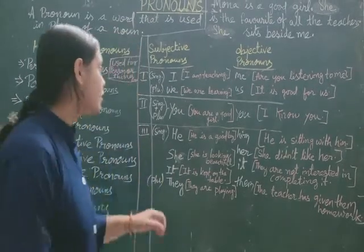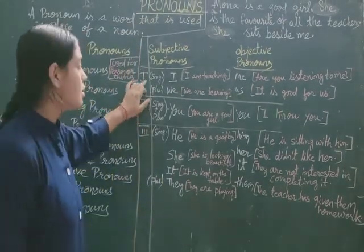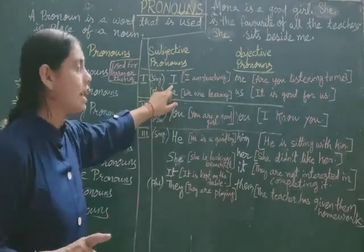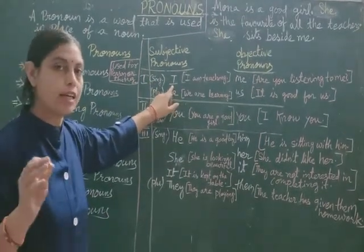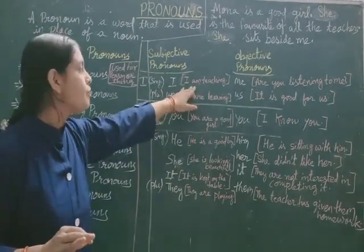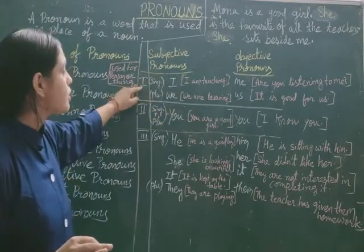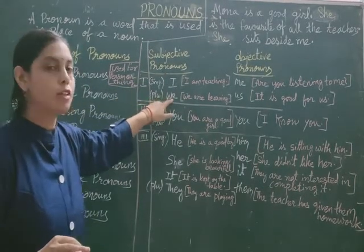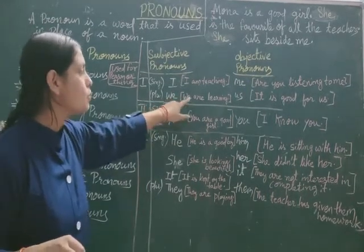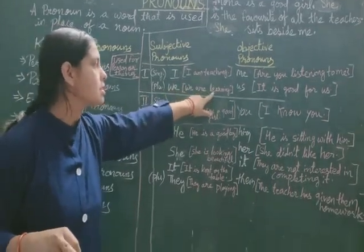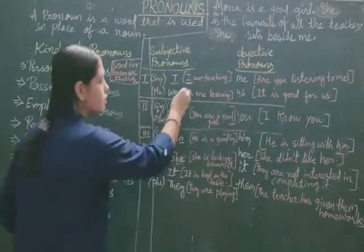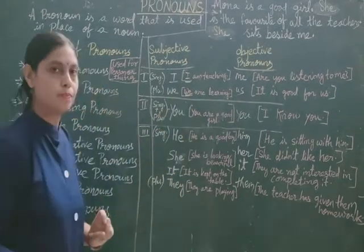In first person singular, the subjective pronoun is 'I' — for example, 'I am teaching', where I is the subject. Then first person plural subjective pronoun is 'we' — for example, 'We are listening', where we is the subject.